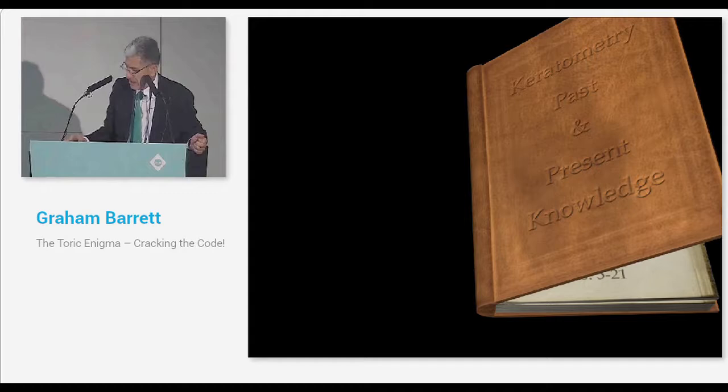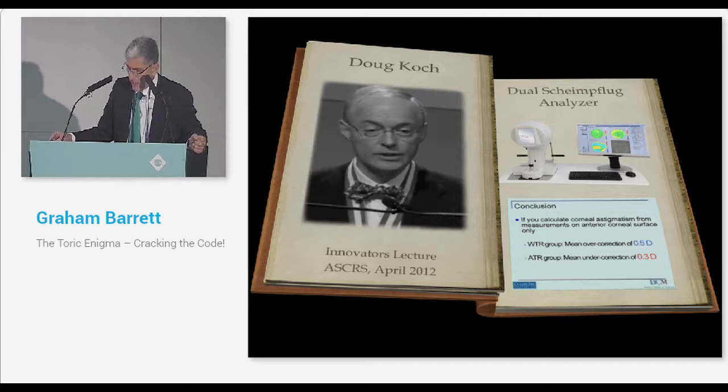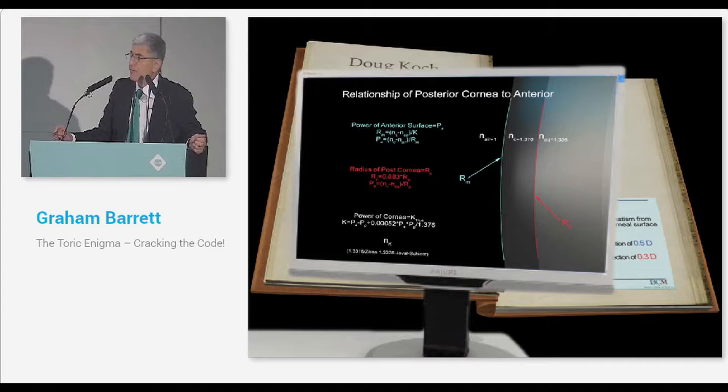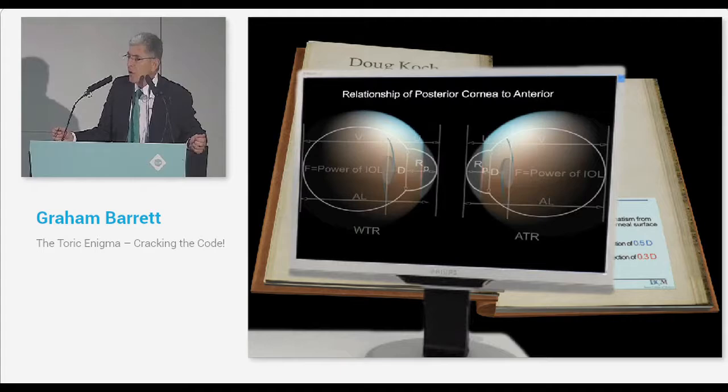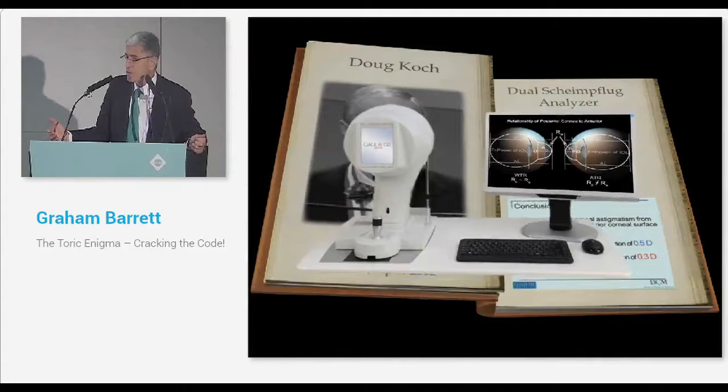Doug Koch reminded everyone of the importance of Jabal's rule in his Innovator's Lecture in 2012. He also, on a population base, showed that when you have increasing with-the-rule astigmatism, you get increasing amounts of posterior corneal astigmatism. But when you have increasing amounts of against-the-rule astigmatism, you don't. It's pretty strange.